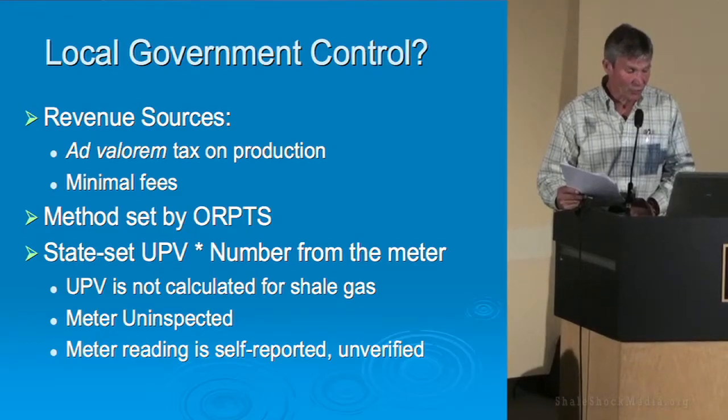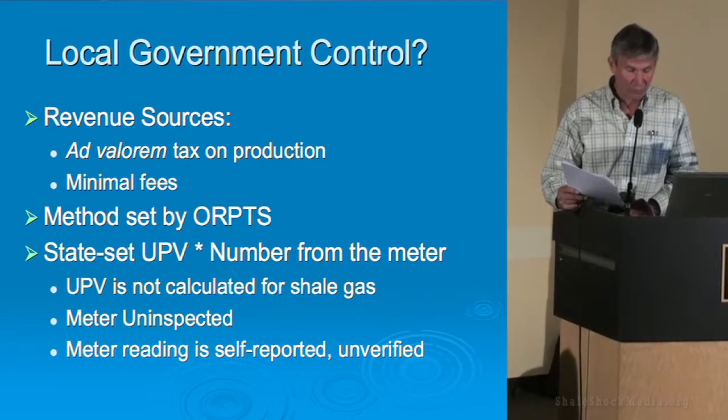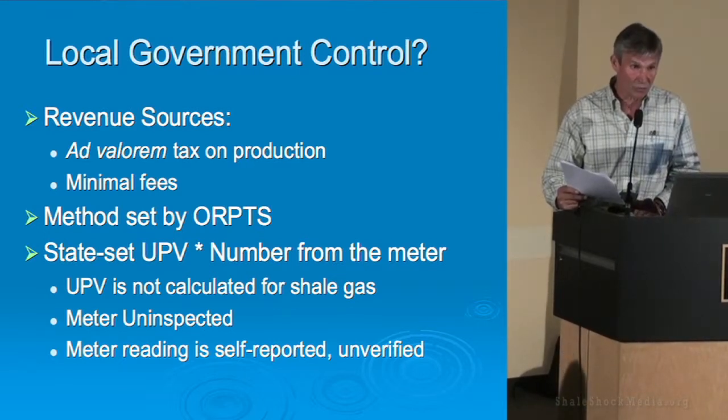We'll spend time on subsequent slides going into the ad valorem tax. The methodology was set up by ORPS back in 1978. It was a different type of gas they were looking at, and they hired a firm to determine the best way to assess the value of gas. That was done in 1978, long before anyone knew of shale gas. The local government's control over tax revenue from ad valorem is a simple math calculation: the amount of assessment told to you by the state is multiplied by your tax rate, and the revenue is the product of that.